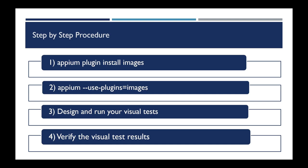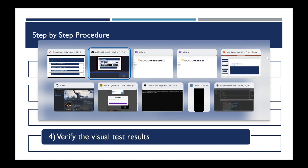We will see this clearly in the demo. We have four steps for doing visual automation testing using Appium: first, we need to install the plugin called 'images'; then we invoke the Appium server using this plugin; in the third step we set up and design the visual test; and in the fourth step we run the visual test and validate the results. Let's get started with step one — let me open the command prompt.